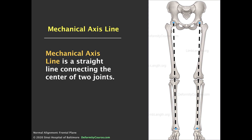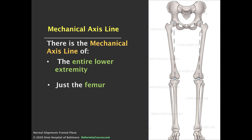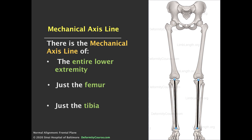The mechanical axis line is a straight line connecting the center of two joints. There is a mechanical axis line of the entire lower extremity, of just the femur, and of just the tibia.